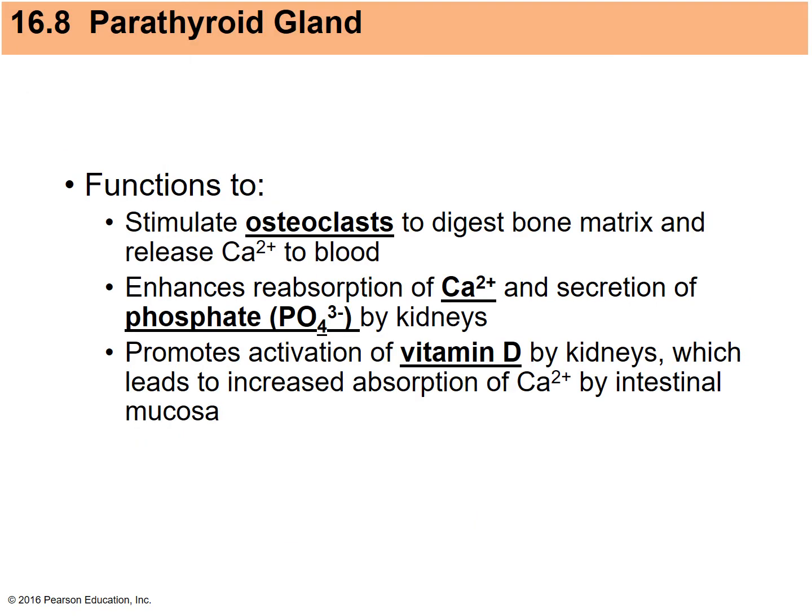Parathyroid hormone stimulates osteoclasts to break down the bone matrix, releasing calcium into the blood, which brings calcium levels back up. It also increases the reabsorption of calcium in the kidneys.